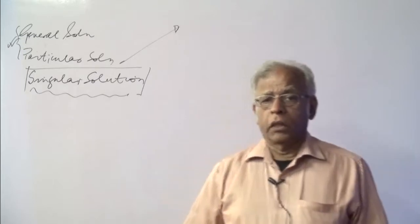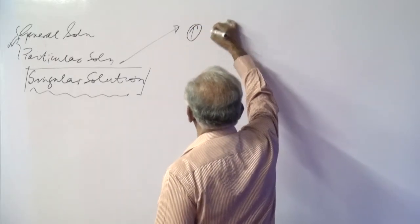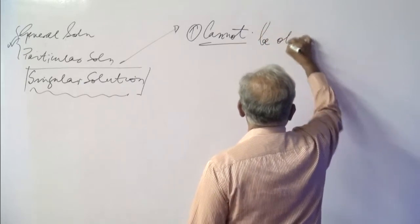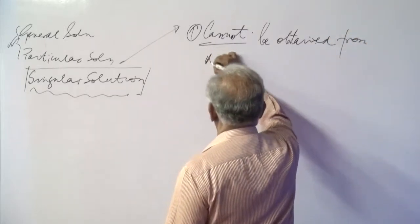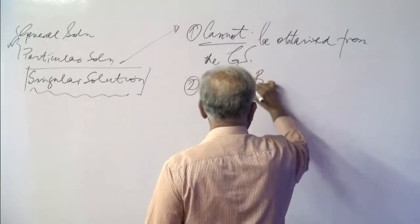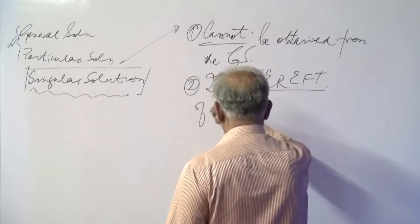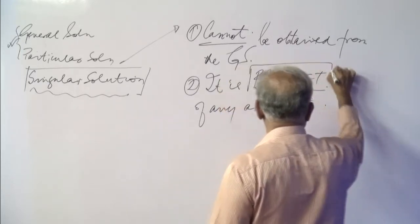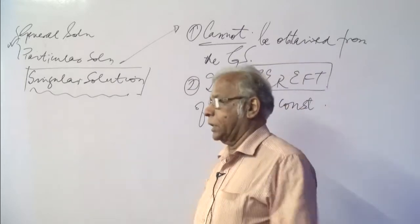We now take a different category of solution called a singular solution. The characteristics of a singular solution are two in number. Number one, a singular solution cannot be obtained from the general solution. Number two, it is bereft of any arbitrary constant — in other words, it is without any independent arbitrary constant.